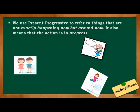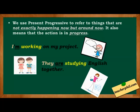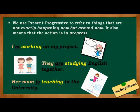The next reason we use present progressive is to refer to things that are not exactly happening now, but around now. It also means that the action is in progress. Examples: I am working on my project. They are studying English together. Her mom is teaching in the university. The subjects are not exactly doing these actions at this moment, but they are in the process of doing it.